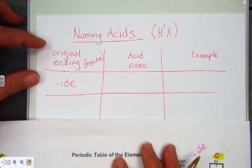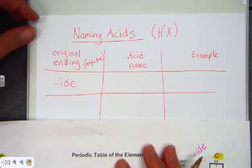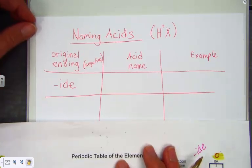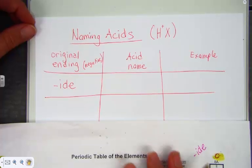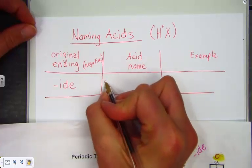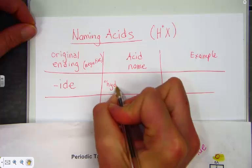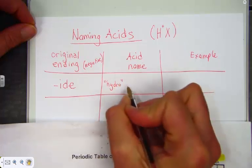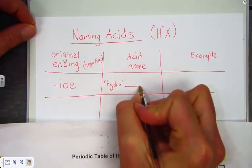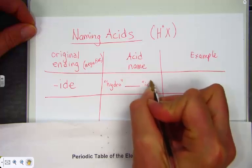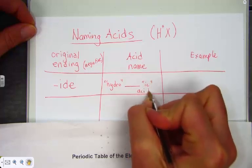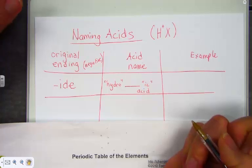If that's the case, if the original negative ion ended with -ide, here's now how to name them in an acid rule. We say hydro, and then whatever that root word is for the element ended with -ic, acid. Hydro, root word, acid.